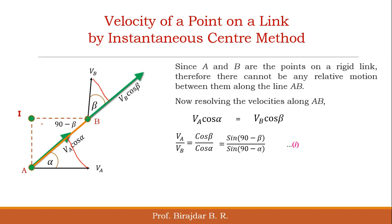Looking at the angles: since the perpendicular gives 90°, the angle at A becomes 90°−α and the angle at B becomes 90°−β. This gives us one triangle ABI, which is a right-angle triangle.